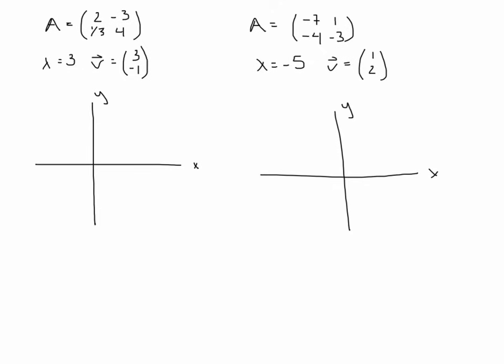Now here are two systems with a repeated eigenvalue. The graphing process starts similarly — look at the eigenvector. For the first system, the eigenvector is (3, -1), so we draw a line through (3, -1) and the origin. The eigenvalue is positive, so all solutions tend away from the origin. But we need to determine whether solutions spiral clockwise or counterclockwise.